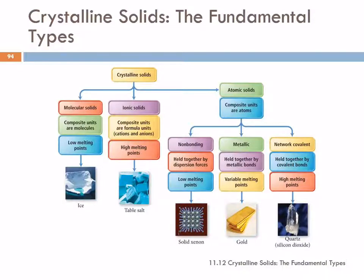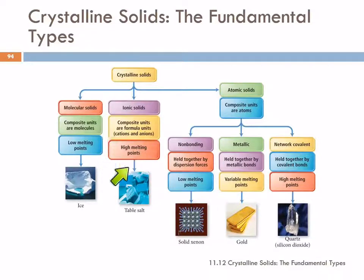We don't think of molecules for ionic compounds, but if we did, it would be whatever the whole chunk is. And so they are going to have high melting points because all those ions are held together very strongly.